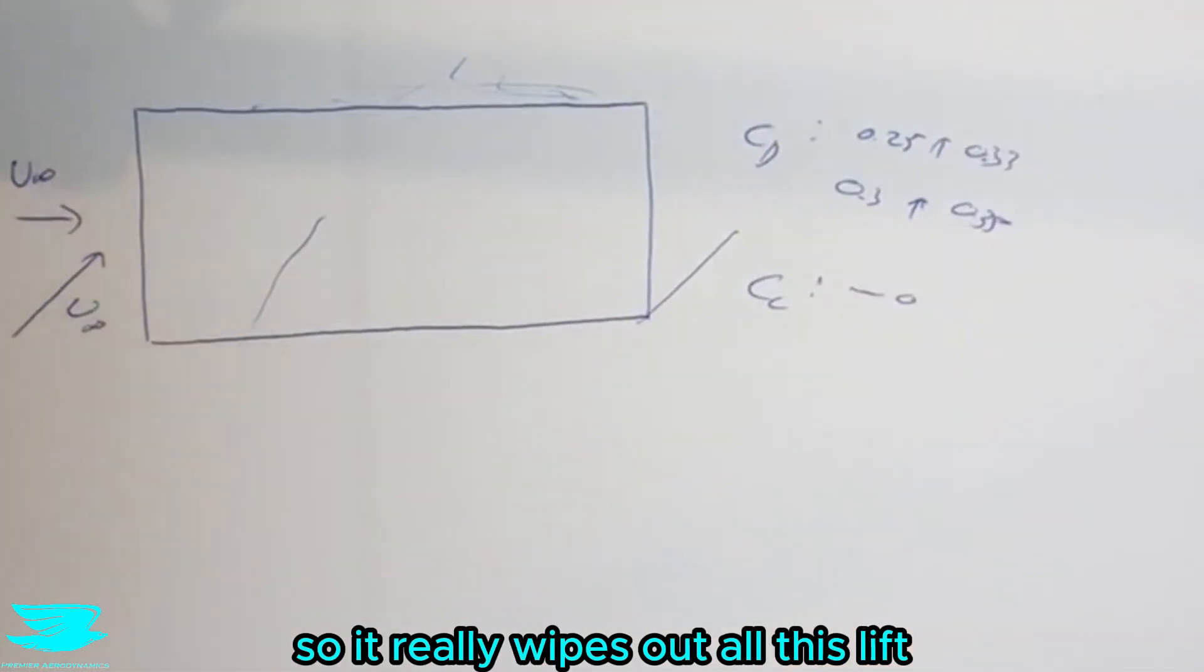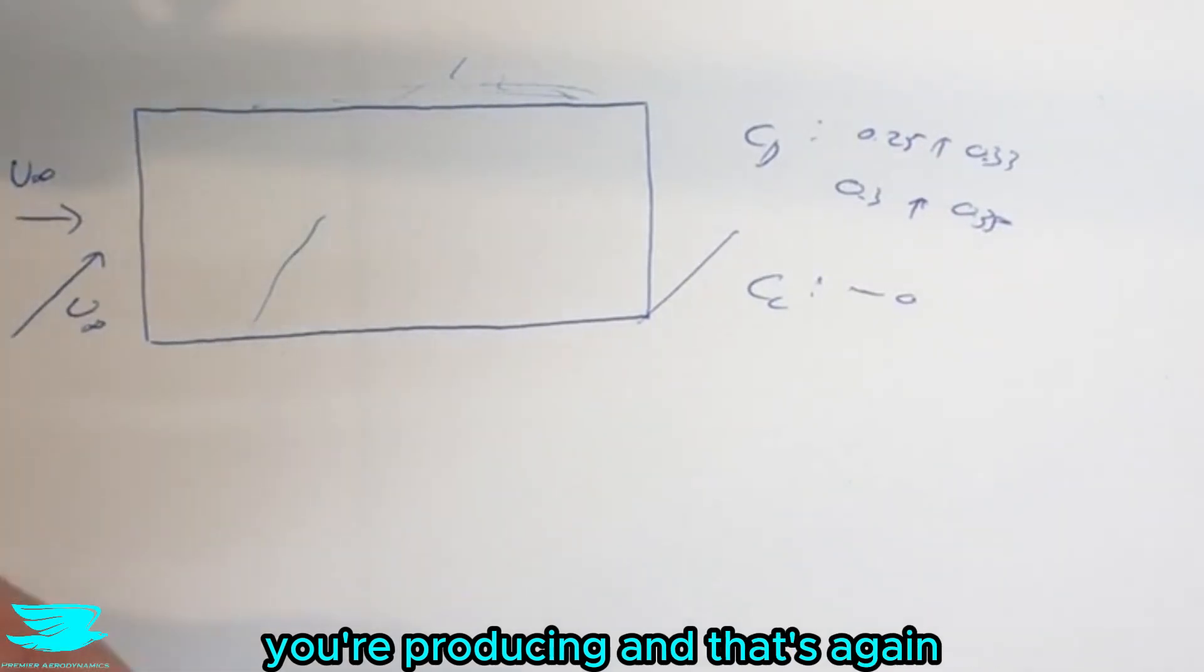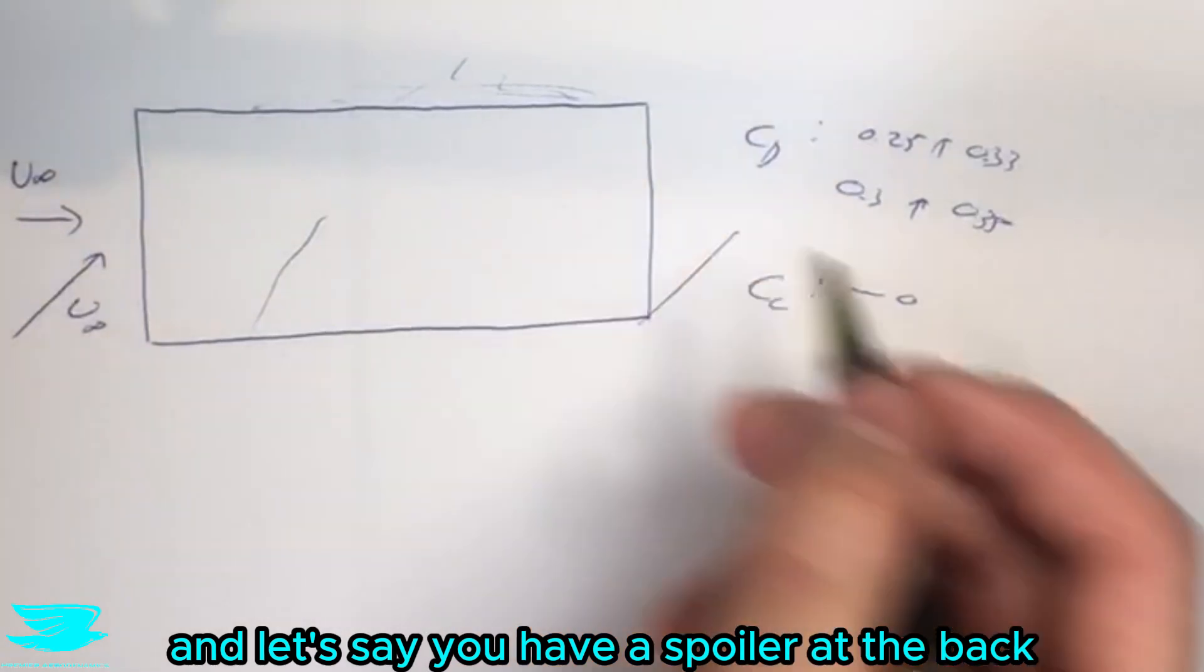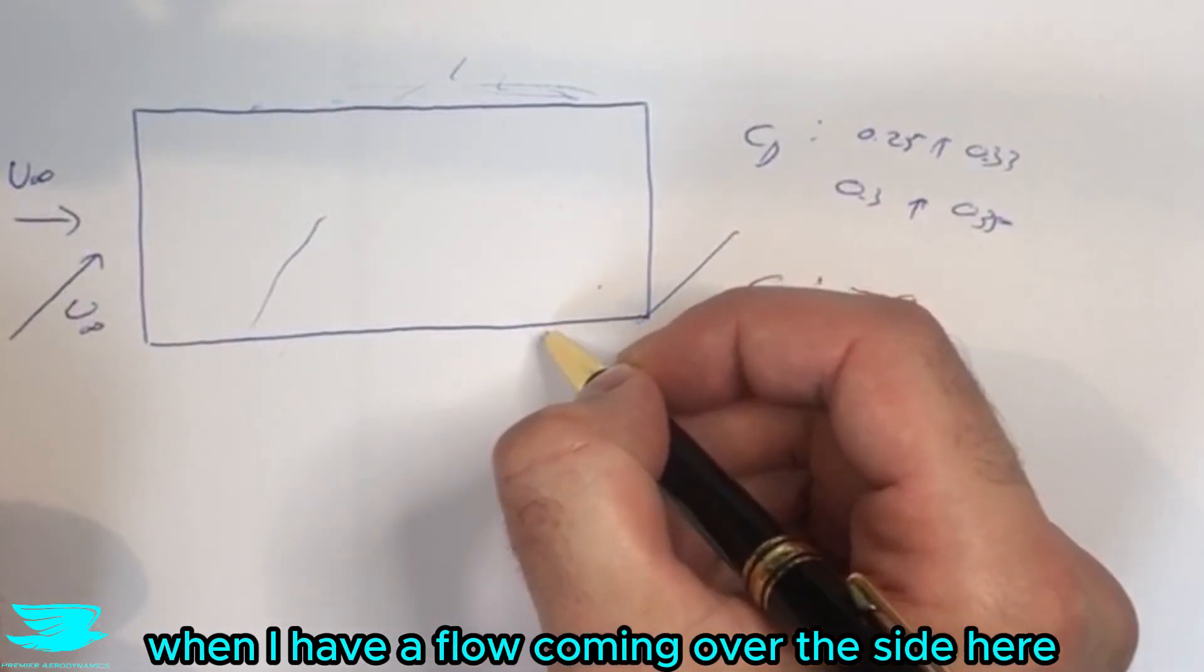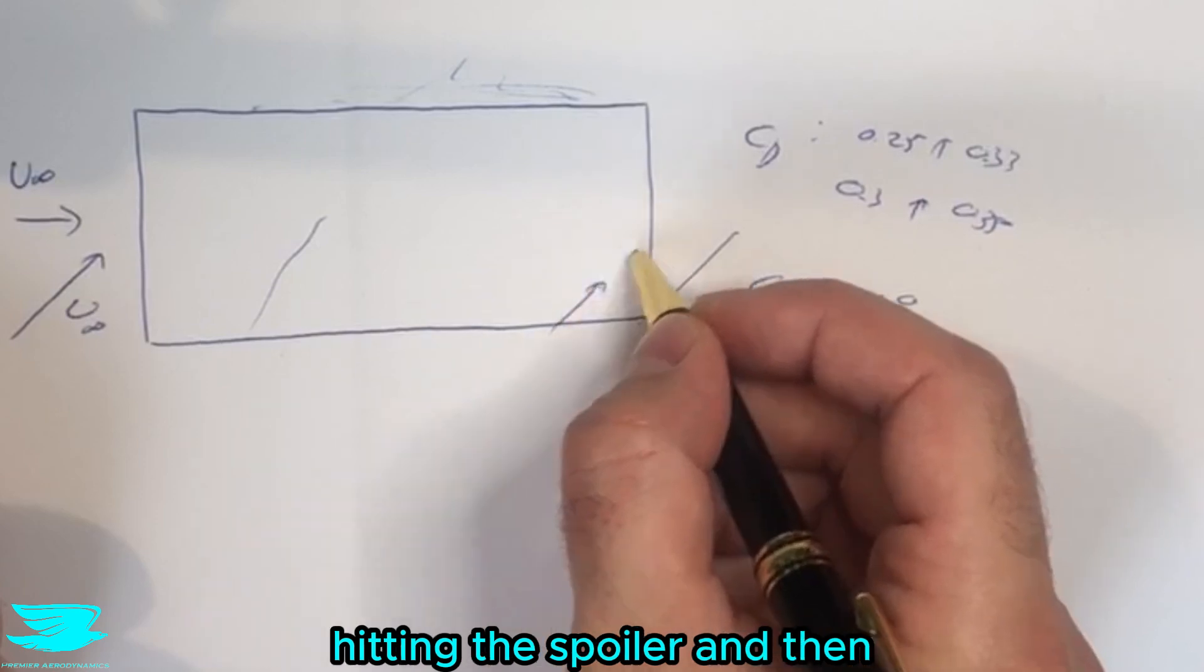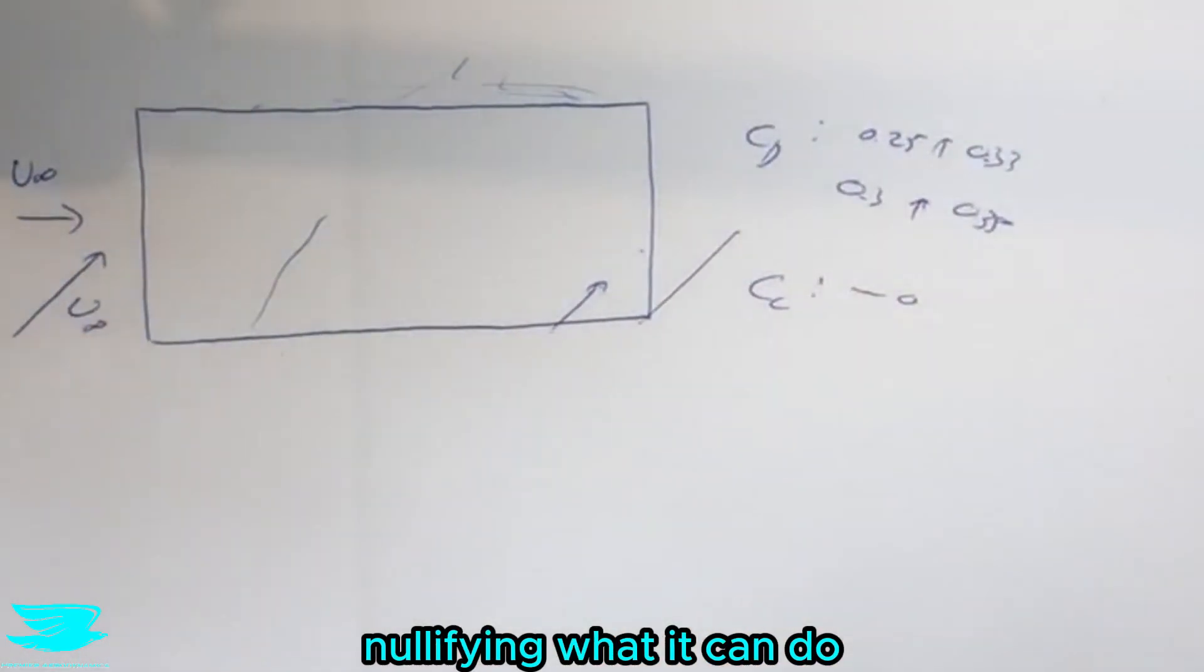So it really wipes out all this downforce that you're producing, and that's again because the car is optimized for one direction. Let's say you have a spoiler at the back, well now you have a flow coming over the side here and that might result in some separated flow hitting the spoiler and then nullifying what it can do.